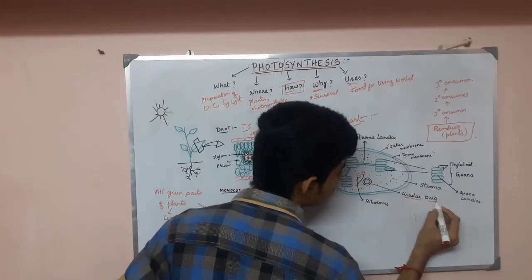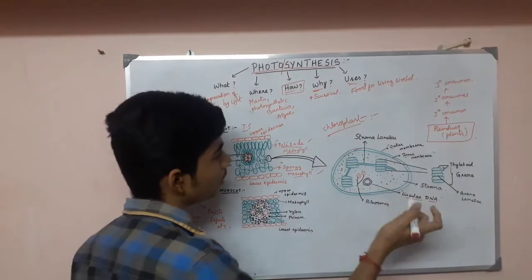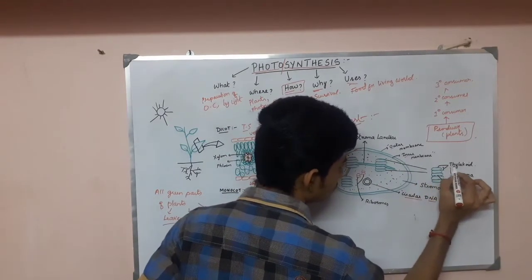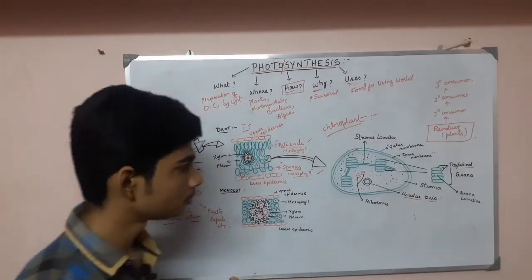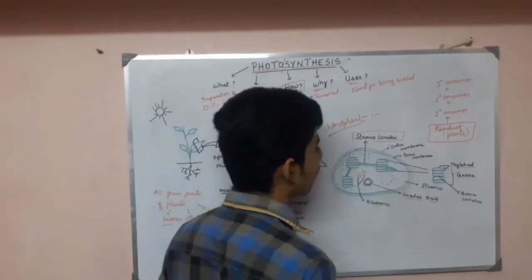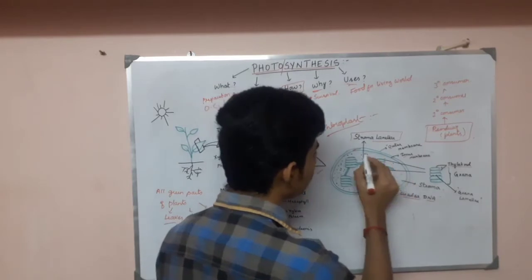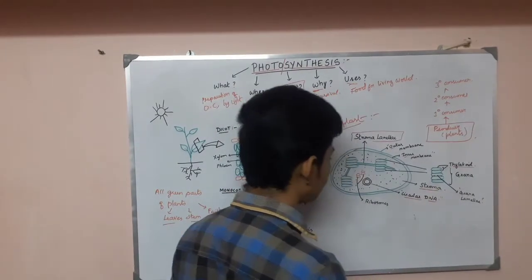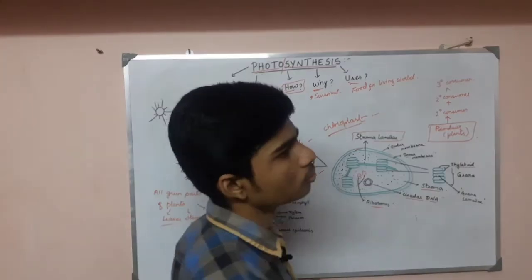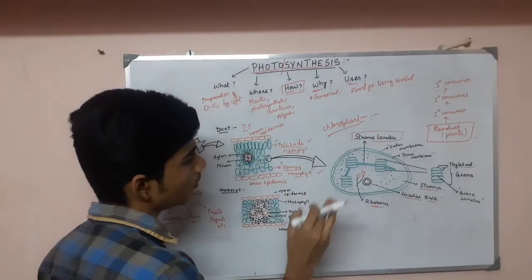The chloroplast contains circular DNA — an important feature similar to mitochondria. It contains structures known as grana; one single unit is a thylakoid, and repeating units of thylakoid are known as grana. Each grana is interconnected through a lamella known as stromal lamella, and each thylakoid is interconnected through a lamella known as grana lamella. The fluid inside the chloroplast is known as stroma, and it also contains many molecules, cell organelles, and granules.